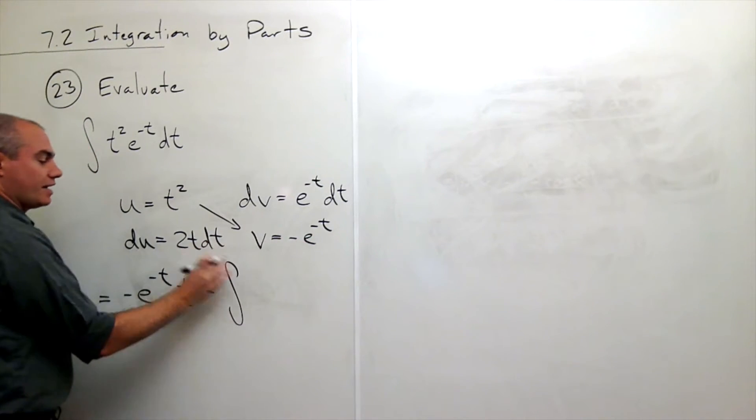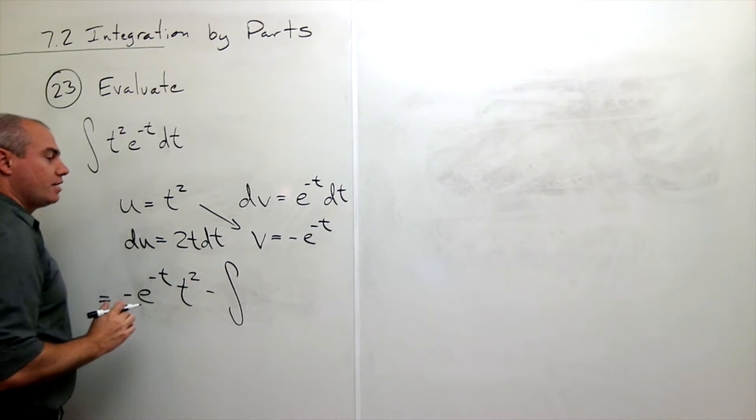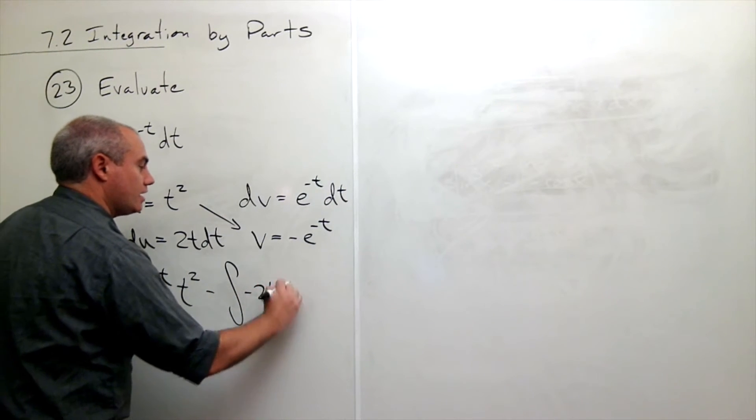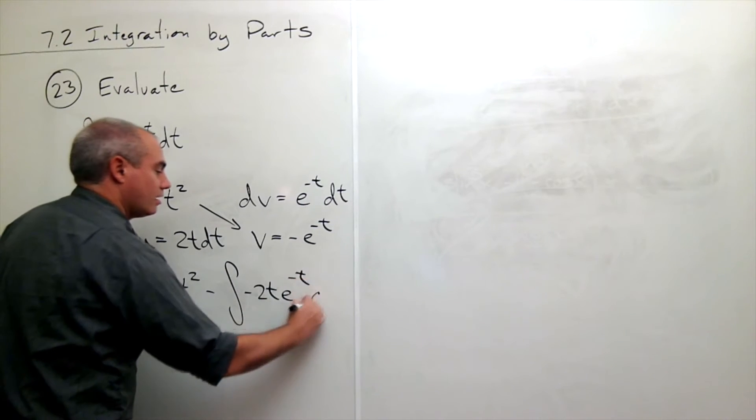So I multiply these two guys together and put it in this integral. So I get minus 2t e to the minus t dt.